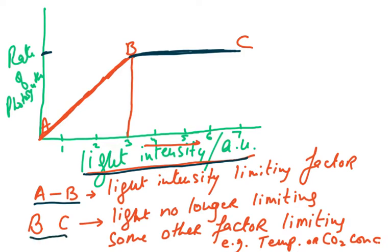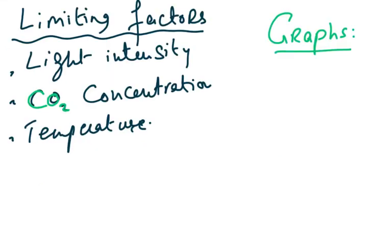From B to C, light is no longer limiting because the rate is now constant. Some other factor is now limiting, which could be temperature or carbon dioxide concentration. The three factors we are talking about as limiting factors are light intensity, CO2 concentration, and temperature.